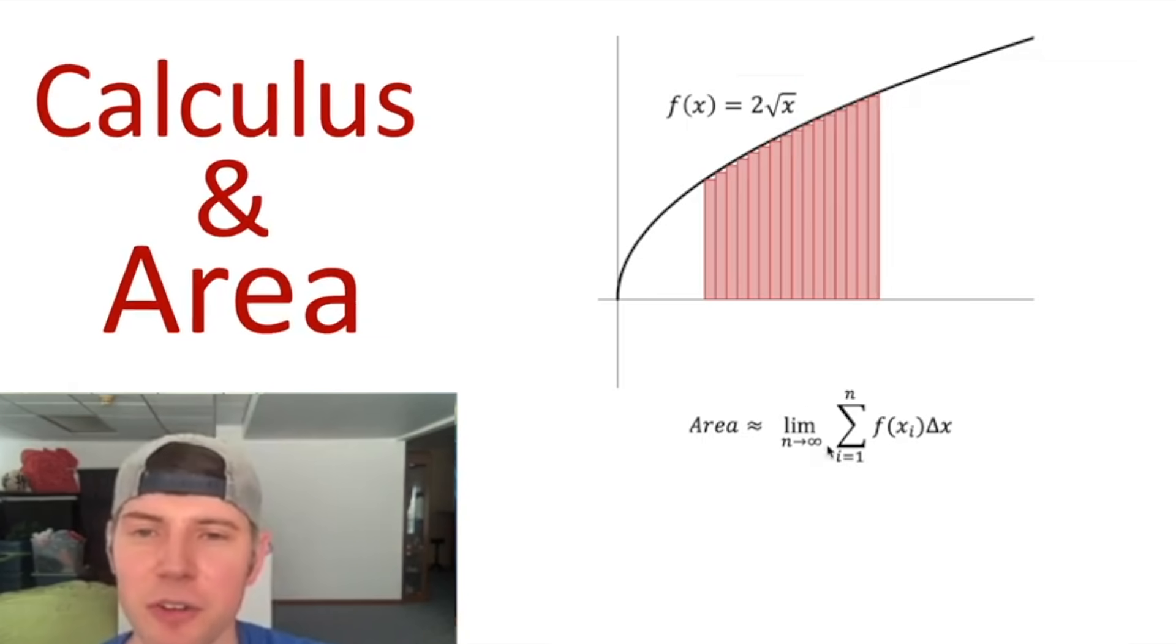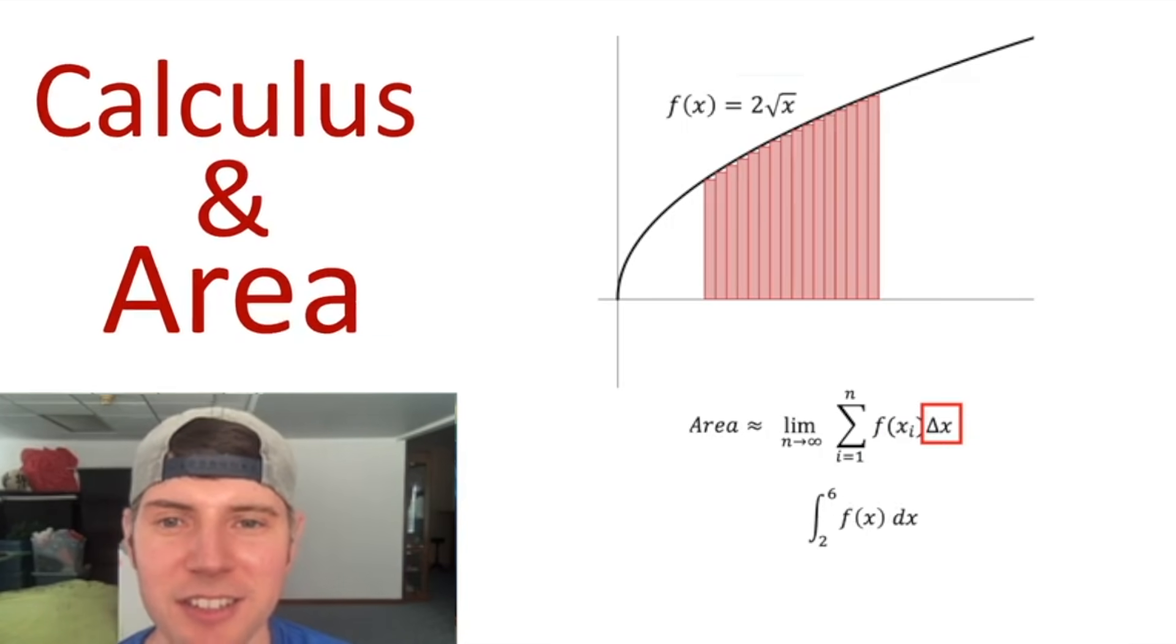We've come up with new notation for this that visually mimics that smoothness. This right here gets rewritten as the integral symbol, which is much more smooth. This F of X_I doesn't make sense anymore because it's discrete jumps. We want it to be smooth, so we're just going to say F of X. And the delta X, we also have a smooth way of expressing this as that distance goes to zero. We call it DX. And this is an integral.